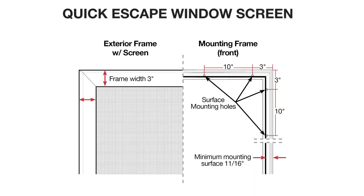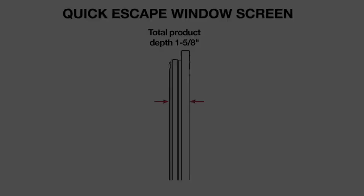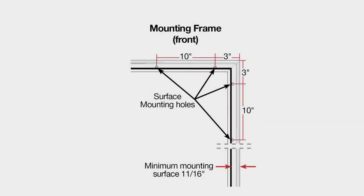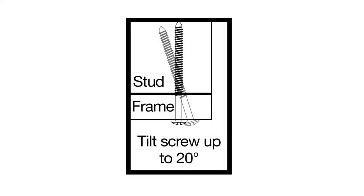The quick escape model frame width is 3 inches and the depth is 1-5/8 inches. The 11/16 inch minimum mounting surface is located along the outside edge of the frame as shown. For both cleanable and quick escape models, mounting screws can also be angled to ensure they reach the framing.